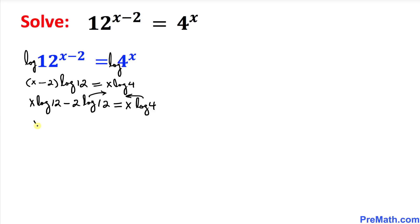So we can write this: x log of 12 minus x log of 4 equal to 2 times log of 12.